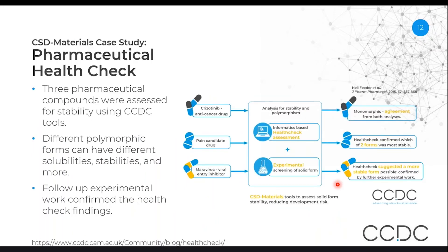To give an example based on a real-world use case, we have a pharmaceutical health check, as we call it. In this workflow, we take drug candidates and use our variety of tools in order to assess how likely those candidates are to form stable polymorphs. In this example, available on our website, three pharmaceutical compounds were assessed for their stability using our tools.